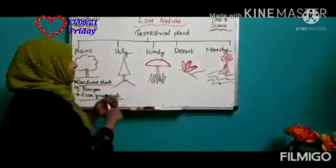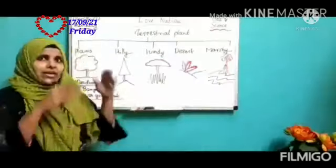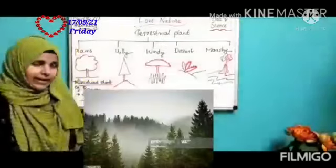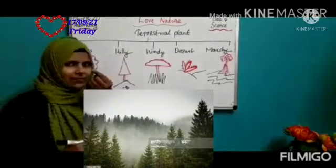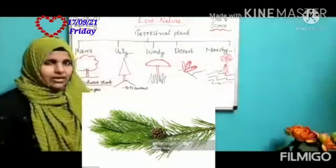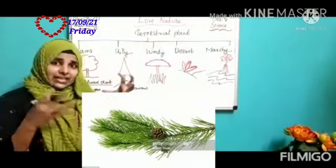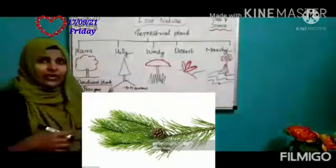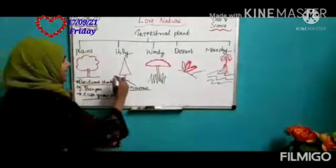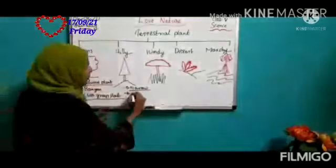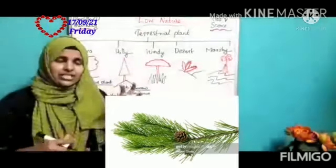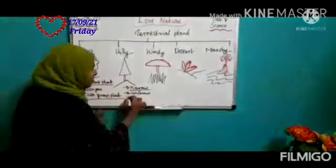Next, plants living in hilly regions have a conical shape — branches grow in a cone shape. We also call these coniferous plants. Their leaves are very narrow. Why narrow? Because in hilly regions there is full of snow, and if leaves were broad, they would collect snow and the plant would die. Narrow leaves allow snow to slide off easily. The flower is also cone-shaped, and inside the cone there is a seed. An example is the pine tree.